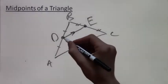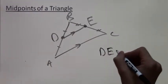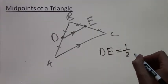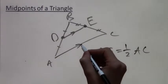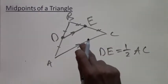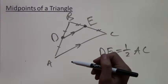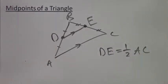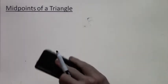First of all, it is parallel to the base. So DE is parallel to AC. And another property is that the length of DE is exactly half the length of AC. So it is half the length of the side that it is parallel to, which is also the third side of the triangle that we didn't take the midpoint from.